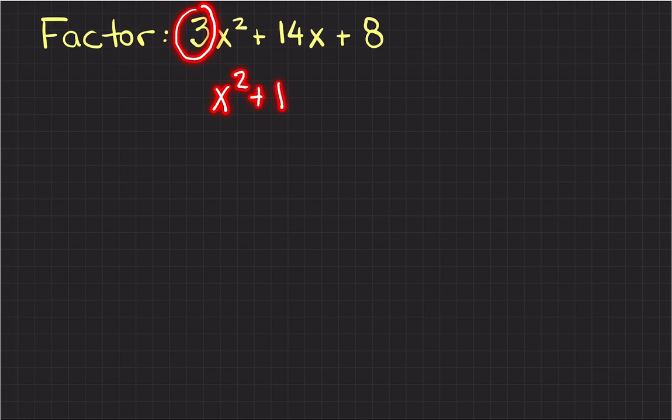...the same expression but without the 3, this would be a very simple factorization where I have to look for the factors of positive 8 that when I add them I get positive 14. That's an easy factorization and I have another video for that kind of factorization, but I do have this 3 in front of the x² and that makes a difference.